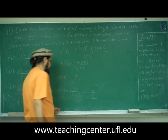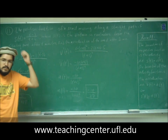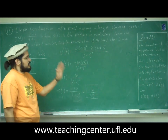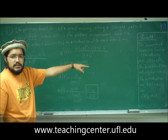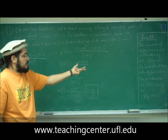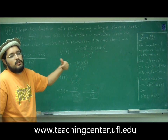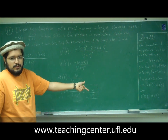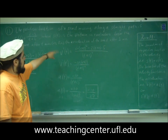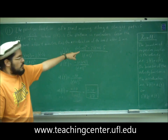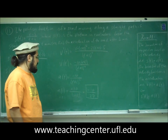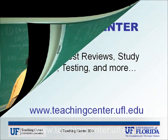That's the acceleration of the snail after 1 minute. The important thing is knowing the derivative of the position is the velocity, and the second derivative of the position is the acceleration, or the derivative of the velocity is acceleration. Once you have that, evaluate t equals 1 into the acceleration function, and you will find the acceleration. In this case, it's negative 10 divided by 27.